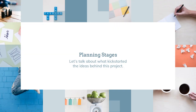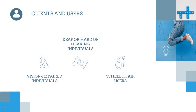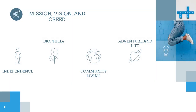Let's talk about what kick-started the ideas behind this project. The intended clients and users of this space include vision-impaired individuals from anywhere on the spectrum independent to live and care, deaf or hard of hearing individuals who need living and thriving spaces suitable to helping sound circulation and lip reading, and wheelchair users who need fully navigable spaces with convenient routing. With these end users in mind, the mission of the district was forged.